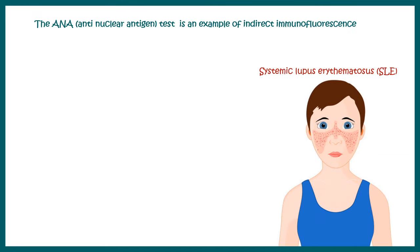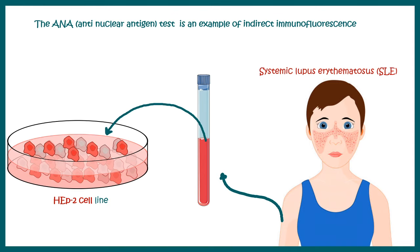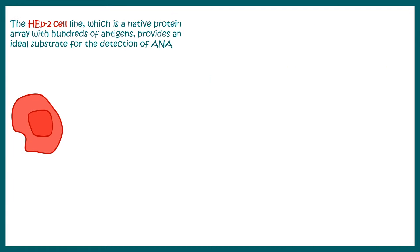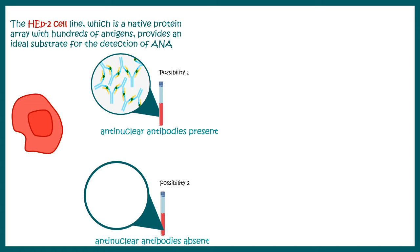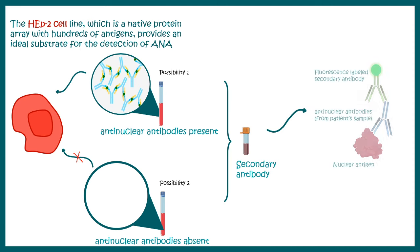Another example for indirect immunofluorescence comes from the detection of systemic lupus erythematosus using the anti-nuclear antigen (ANA) test, where the patient sample is collected and the antibodies are incubated with HEp-2 cell lines. HEp-2 cell lines are important because they present an array of nuclear antigens. There are two scenarios: either anti-nuclear antibodies are present in the patient's blood sample, in which case immunofluorescence will be seen, or they are absent and no immunofluorescence will be detected.